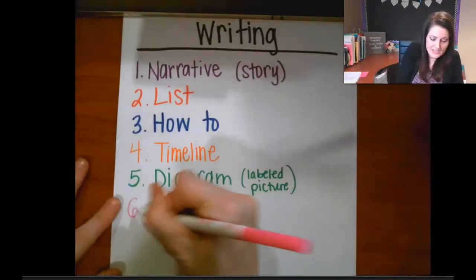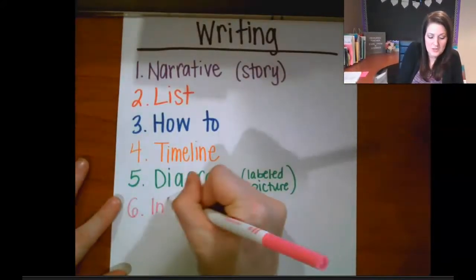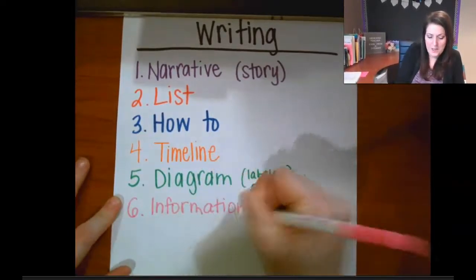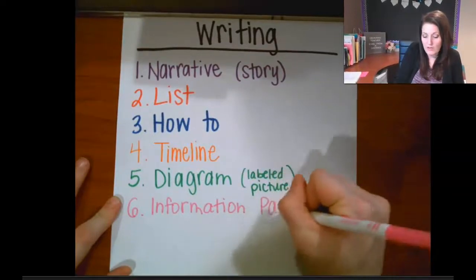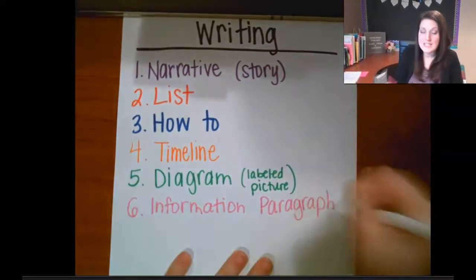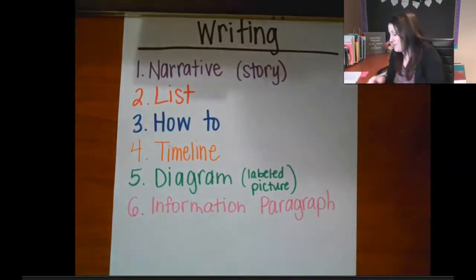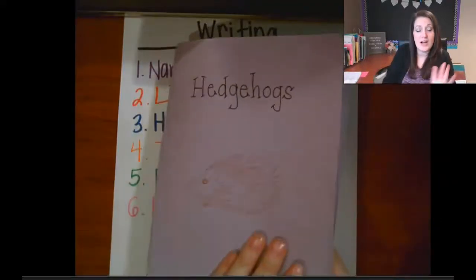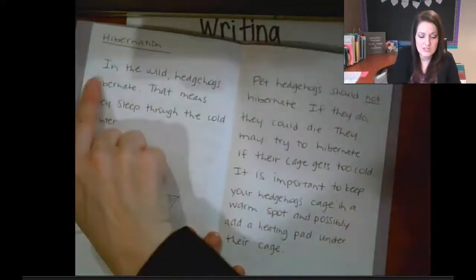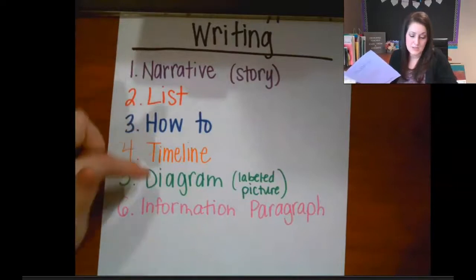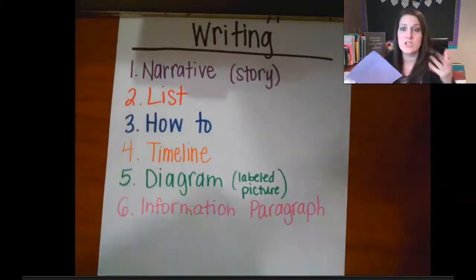The last type I'm going to put on here is an information paragraph — about three to five sentences with an indent. This is where it's not any of the other things: not a story, not a list, not a how-to, a timeline, or a diagram. You're just literally going to tell the reader information.